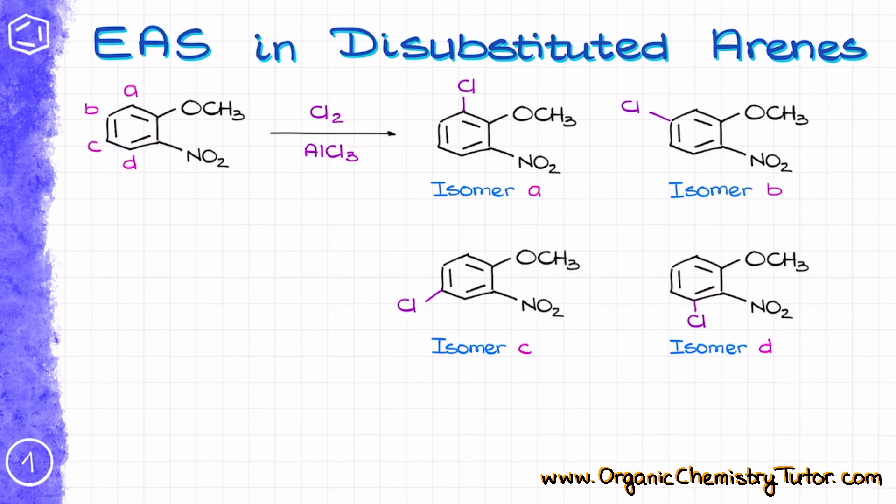But what if I told you that you don't actually need to do that? You can identify the major product and skip the tedious resonance. In this case, isomer C is going to be the major product, and I could figure it out by doing a very simple analysis of the starting material.